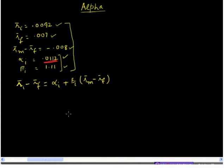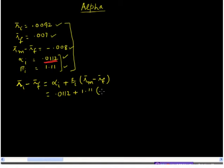We can also write the security's average excess return using the single index model. The average excess return equals alpha of 0.0112 plus beta of 1.11 multiplied by the average excess return on the market of negative 0.008. Solving this gives 0.0024, which is the average excess return on this security as given by the single index model.